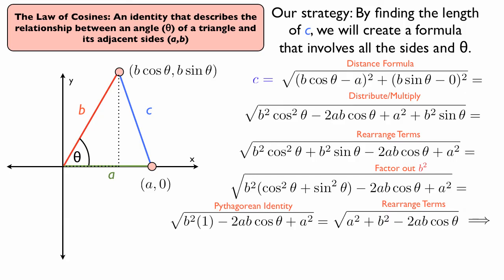And finally, by rearranging the terms, we have a squared plus b squared minus 2ab cosine theta. The square root of that whole big thing is equal to c.